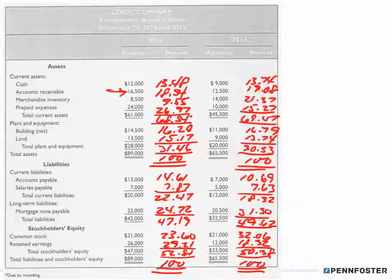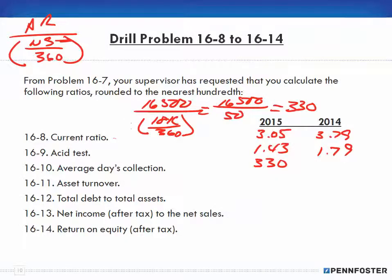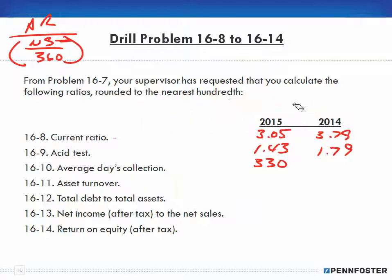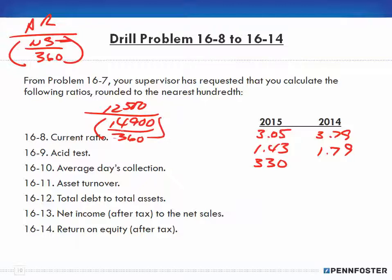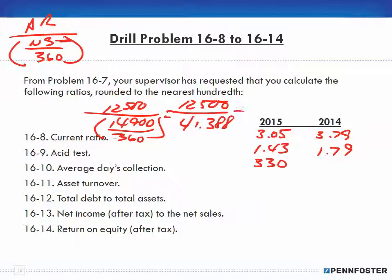For 2014 I'm looking at net sales of 14,900 and accounts receivable of 12,500. Plugging those numbers in: 12,500 divided by 14,900 over 360. So 14,900 divided by 360 gives me 41.3888. Then 12,500 divided by 41.3888 gives me 302.01. So my average days collection for 2014 is 302.01.